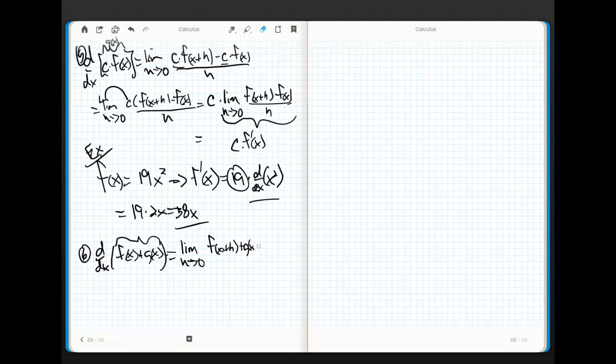All right? Wherever I see an x in this thing, I just stick an x plus h. No brainer. And then minus the quantity f of x plus g of x. Getting over here in the margin. All divided by h.